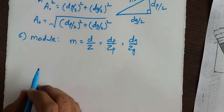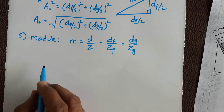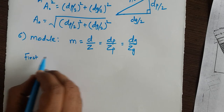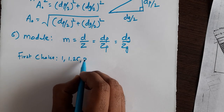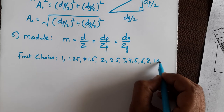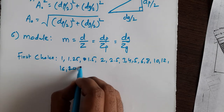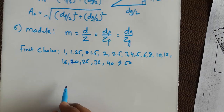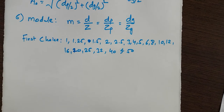Next are the standard values of module at the large end of the teeth in mm. The same values we have seen for spur gear and helical gear apply here. The first choice standard values of module are: 1, 1.25, 1.5, 2, 2.5, 3, 4, 5, 6, 8, 10, 12, 16, 20, 25, 32, 40, and 50. Use these standard values when solving numericals.